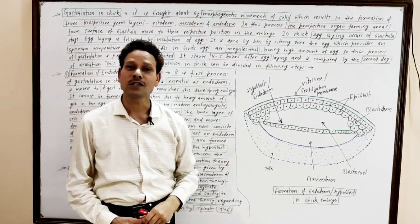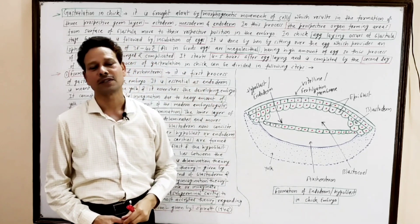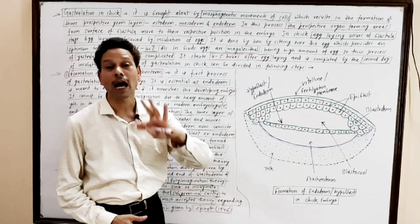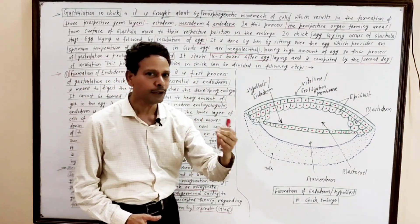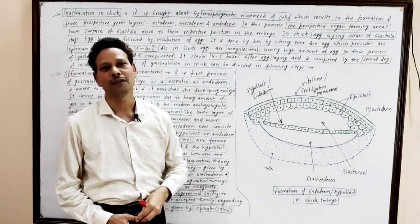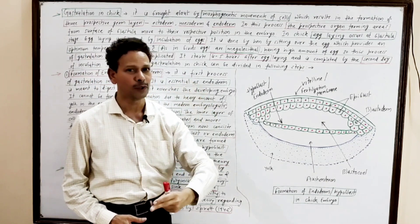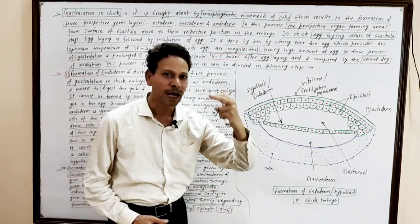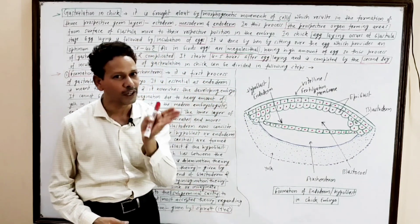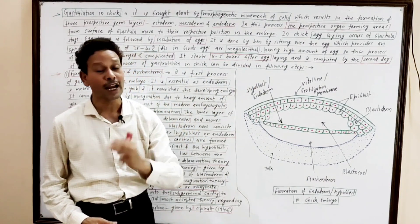In this process of gastrulation, specific morphogenetic movements of cells of the blastoderm result in the formation of three prospective germ layers: ectoderm, mesoderm, and endoderm. It means the blastula, which is a single-layered embryo, is converted into a gastrula — that is, a three germ-layered structure of ectoderm, mesoderm, and endoderm.